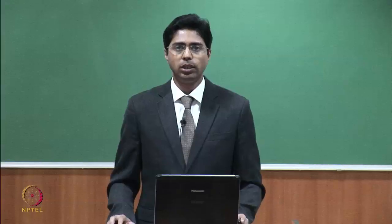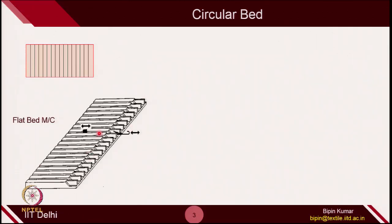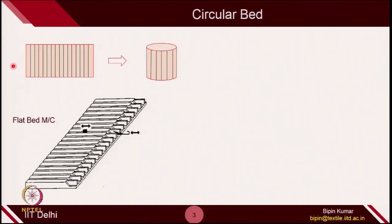Fundamentally, if you look at the bed of flat bed machines, the slots are there and the needles are placed in parallel fashion in each of these slots. This is the rectangular platform on which slots are created and in each slot one needle is placed. To make a circular bed, the design is extremely simple — you just rotate this bed and it acts like a circular. The only difference is that in flat beds both ends are open, but in a circular bed, ends become permanently closed and it acts like a circular.